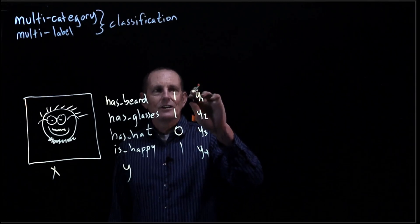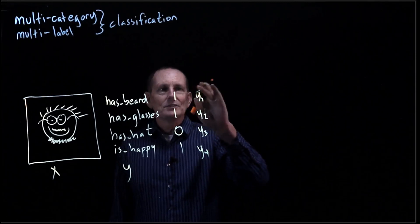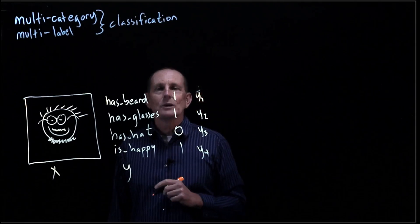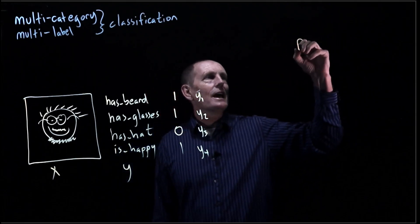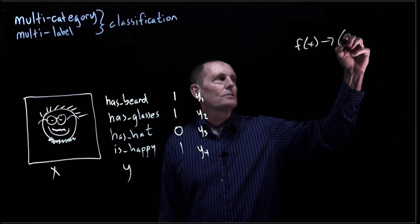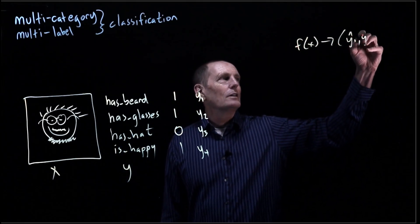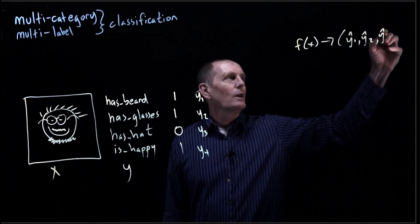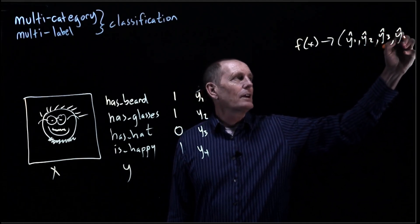Sorry, if these are our examples, so this is our ground truth, y1, y2, y3, y4. And if we look at f of x, we're going to assume that returns us a tuple: y hat 1, y hat 2, y hat 3, and y hat 4.